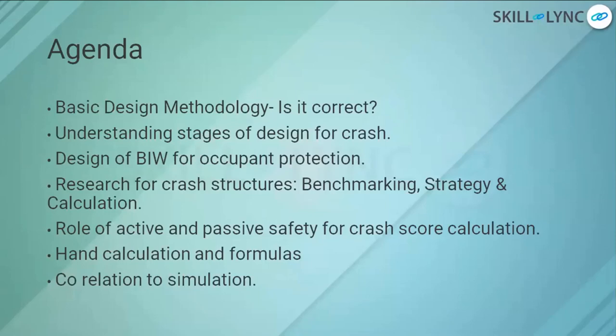How do you benchmark strategy and calculate active and passive safety for crash score calculation? For example, when a vehicle earns a three-star, four-star, or five-star rating, there are also particular decimal numbers — like 3.5, 3.7 — within those ratings. If you're achieving 4.5, there will be a safety bracket where it is calculated whether the vehicle is a five-star or a four-star vehicle. Those distinctions depend on active and passive safety components put into the vehicle.